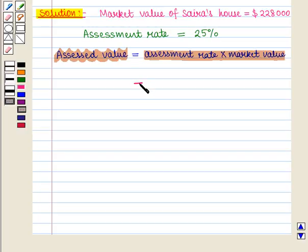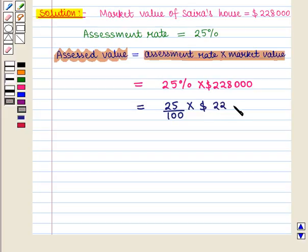This will be equal to 25% into $228,000, which can be written as 25 upon 100 into $228,000. This is equal to 25 into $228,000, which equals $57,000.